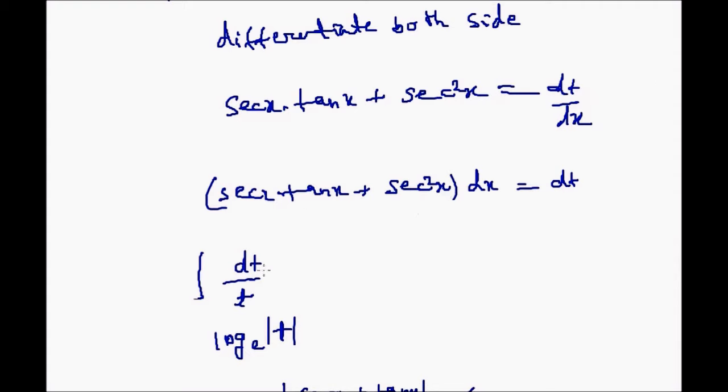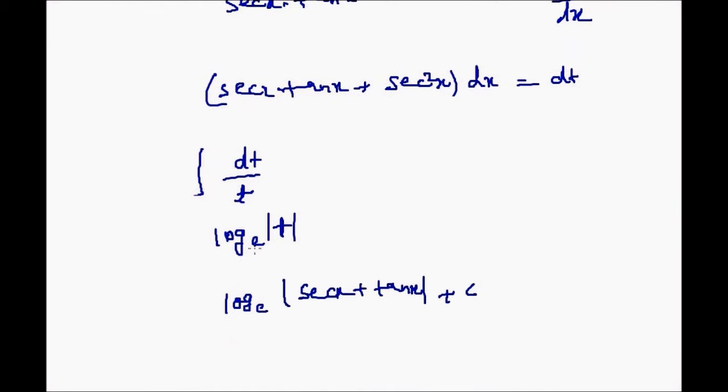We will substitute this value in the above equation. We will get dt by t because this whole term will be dt and denominator will be t. So integration of dt by t is ln t. That we can also write in terms of log base e into t.